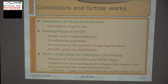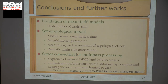To conclude: I've shown some limitations of mean field models, especially for the distribution of grain size. I've described the introduction of the semi-topological model. We obtained some realistic grain size distributions, at least in our context. And it's possible to make a series connection for multipass processing — a good way to model sequences of dynamic recrystallization and metadynamic recrystallization stages — and it's a way to optimize microstructures in industrial processes. You can have a look at the referenced article. Thank you for your attention.